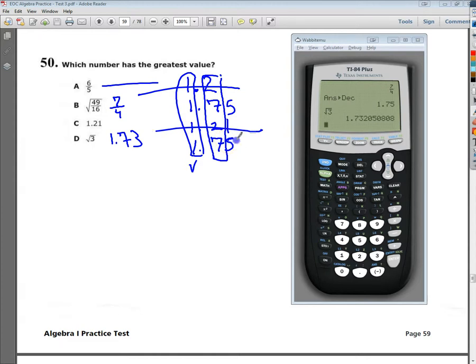So I'm left with 1.75 and 1.73. I don't know why I wrote 5 there. So now I need to compare my hundredths place, and obviously 5 is bigger than 3. So the square root of 49 over 16 gives me the greatest overall value, and it's B.